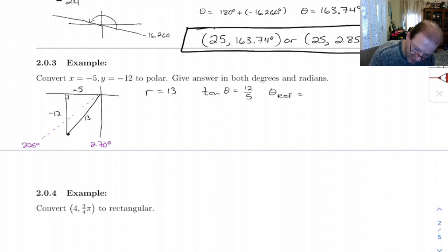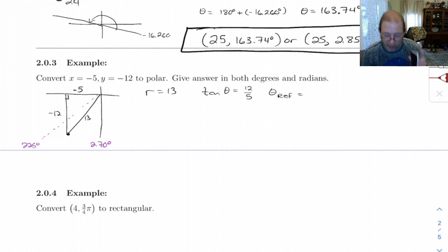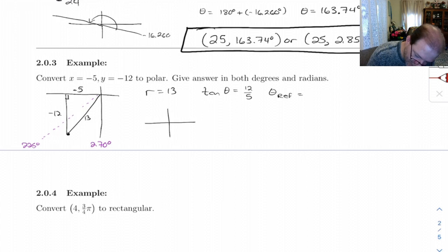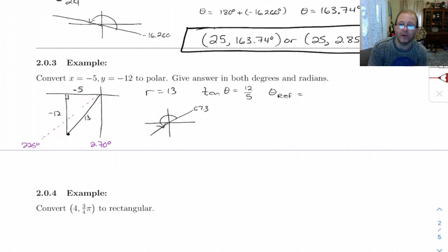So the reference angle that I'll get by doing inverse tan of 12 over 5, inverse tan of that gives me 67.3. Now, 67.3 is in quadrant 1, and that's not drawn very well.